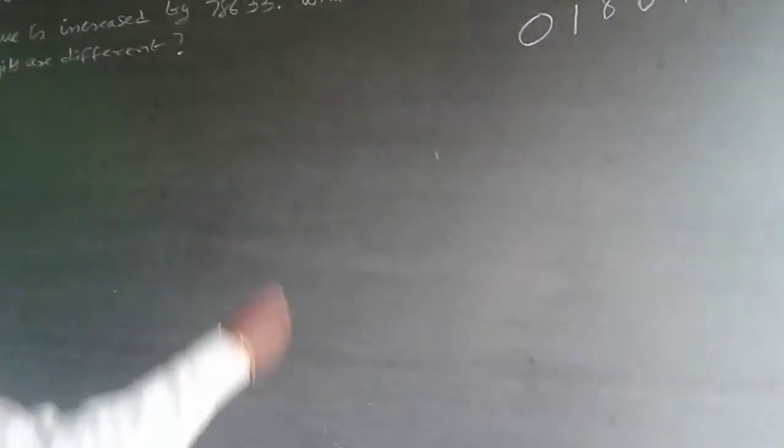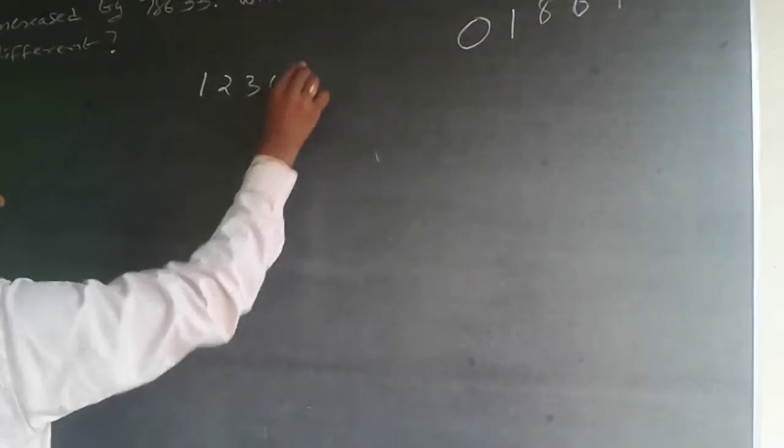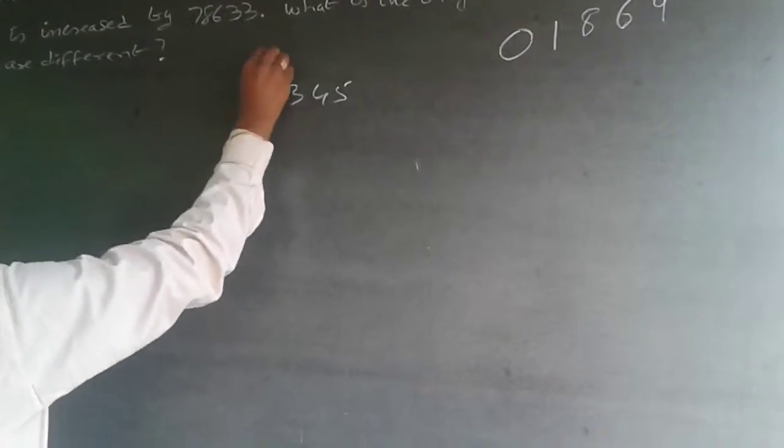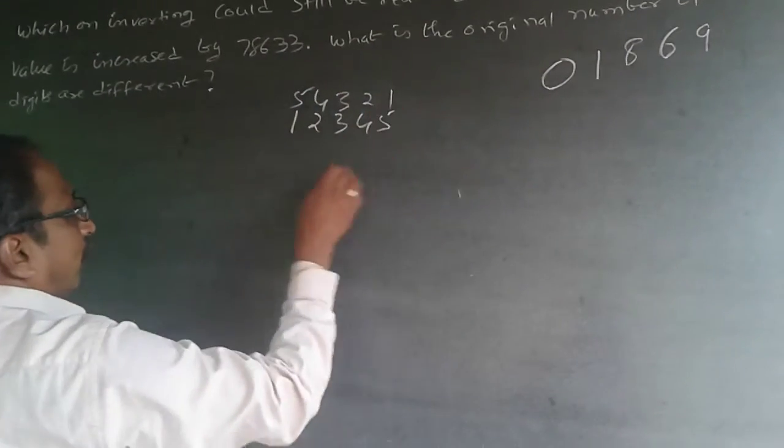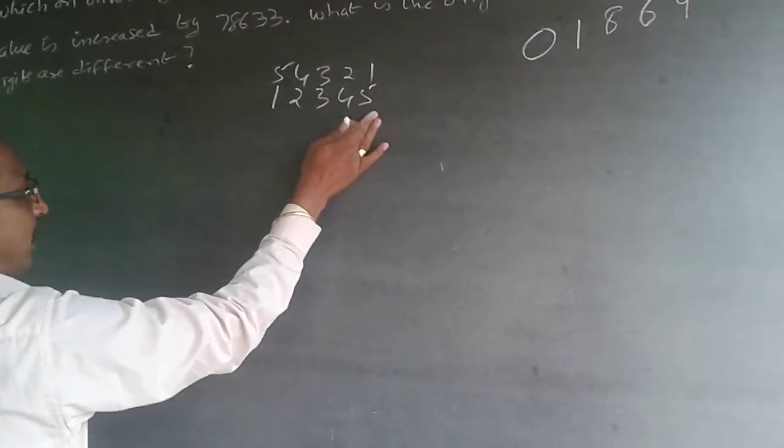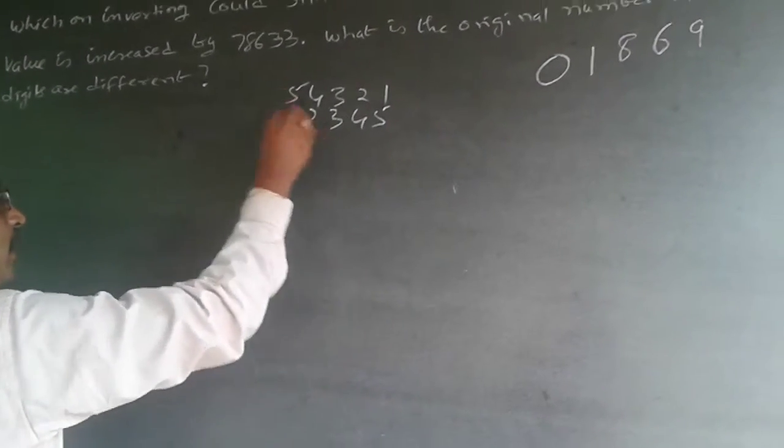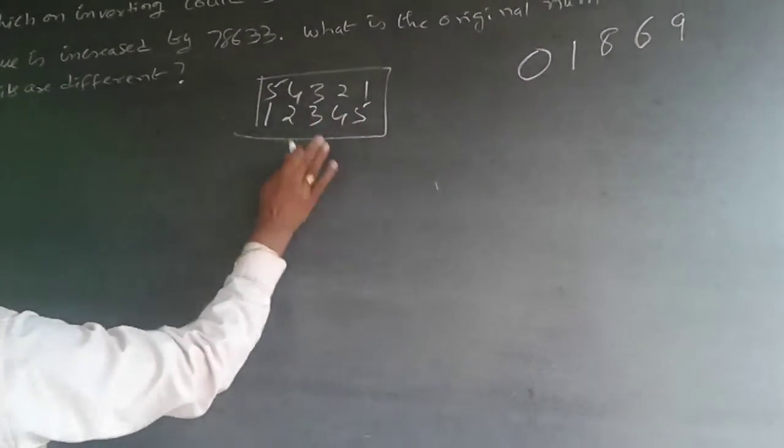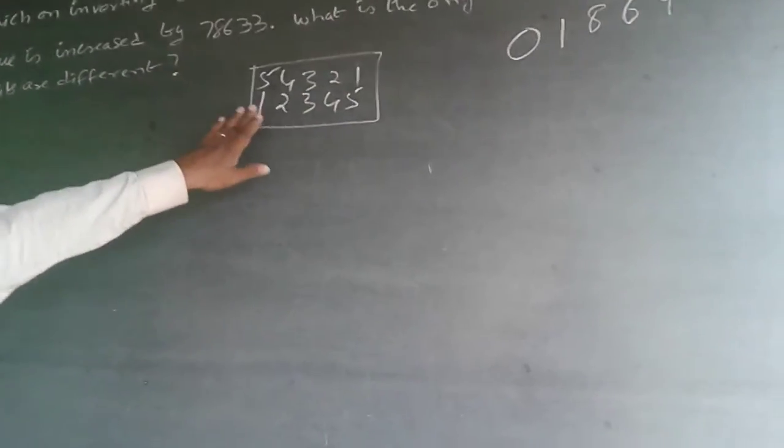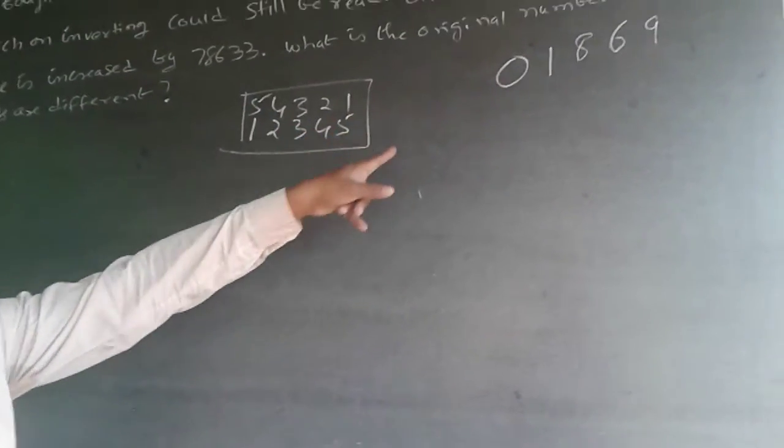Now, what it says is, when the car number is going to increase, inverted and reversing means, suppose it is 12345. Just an example, when I reverse it, this will become 54321. So when I reverse it, it will become 54321. So this has got nothing to do with the problem. Just an example, I am just telling you. So reversal means like this. Inverting and reversing.